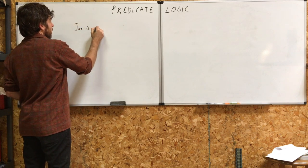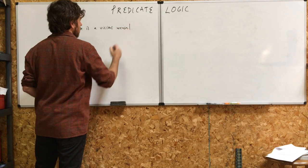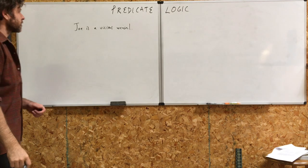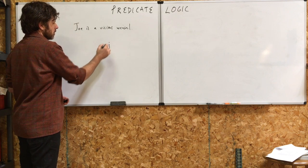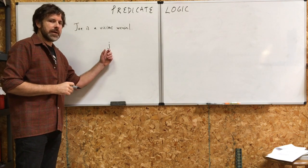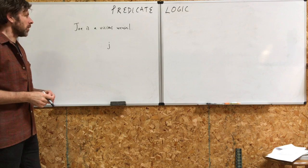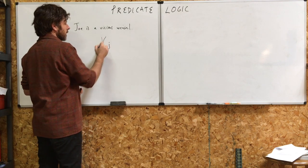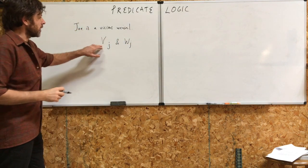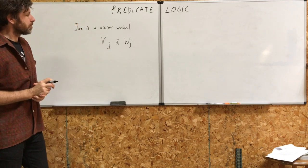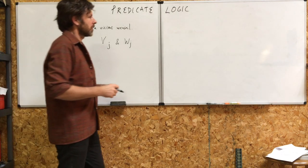A couple more examples. 'Joe is a vicious weasel.' That's an individual constant — lowercase j for Joe. You're saying a couple of things about Joe: Joe is vicious and Joe is a weasel. So: capital V-J and capital W-J.